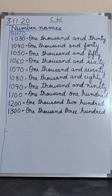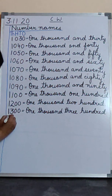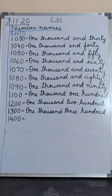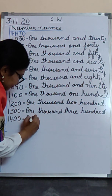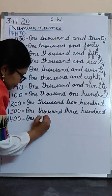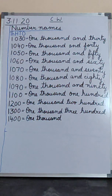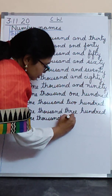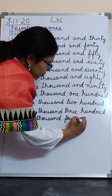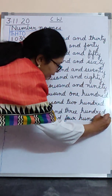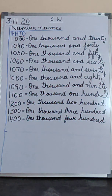H-U-N-D-R-E-D, hundred. Then write one thousand four hundred. One thousand four hundred. See the spelling of thousand — don't write the wrong spelling of thousand. One thousand four hundred. H-U-N-D-R-E-D, hundred. Say and write. When you say and write, you will not make a mistake.